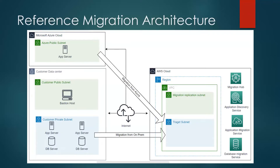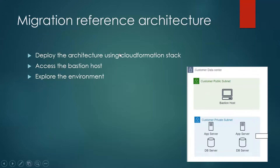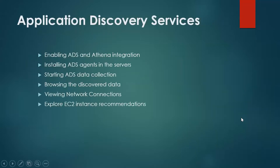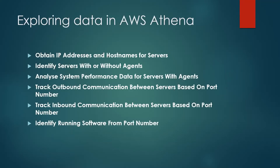Hello everyone, as part of a series of migration videos, I'm onto another video. This is the reference architecture we are talking about — migration of these components to AWS. In previous videos, we deployed this architecture, accessed the bastion host, explored our environment, used ADS to install agents, started data collection, browsed discovered data and network connections in Migration Hub, and then explored all that data into AWS Athena using queries to analyze it.